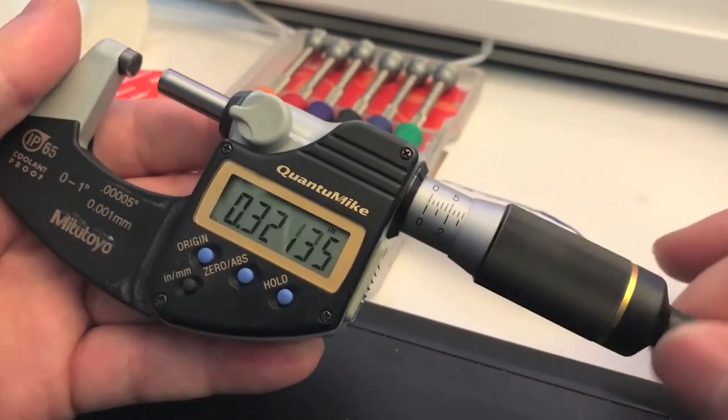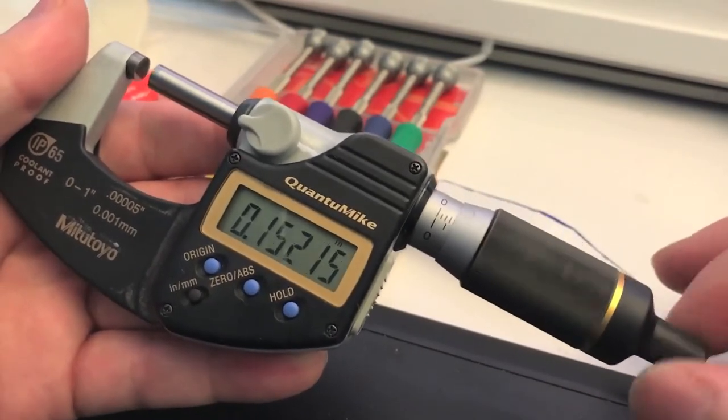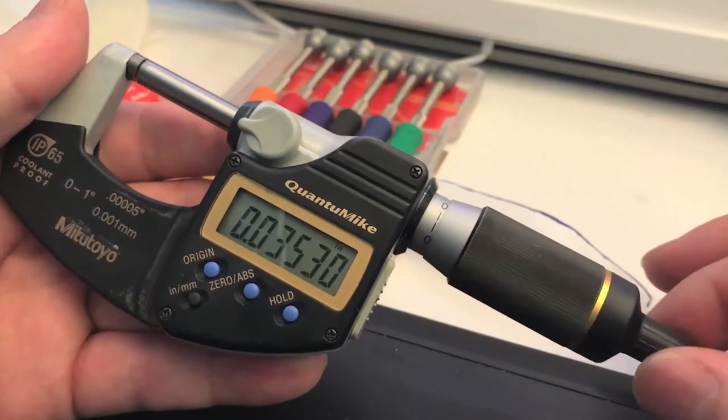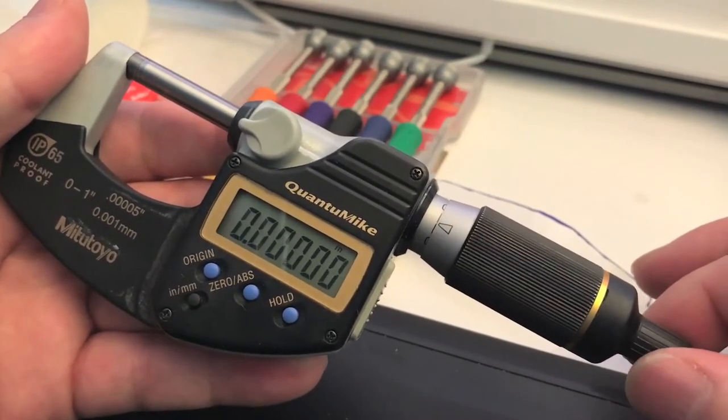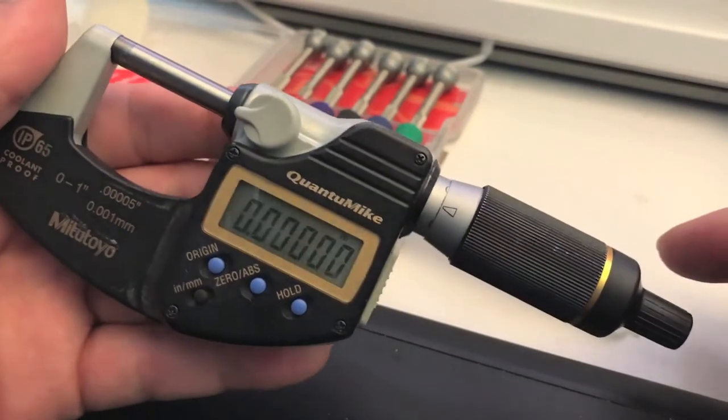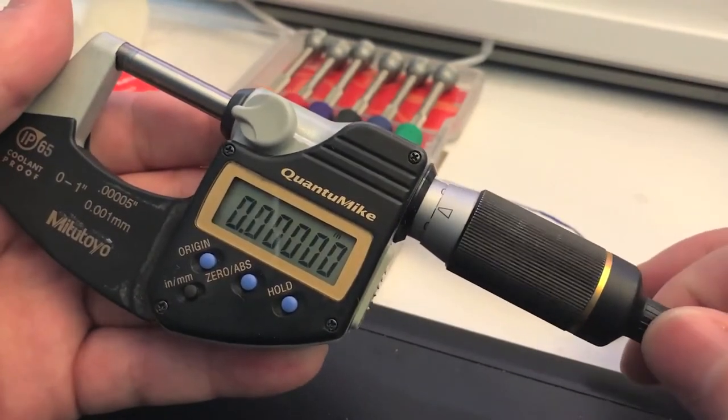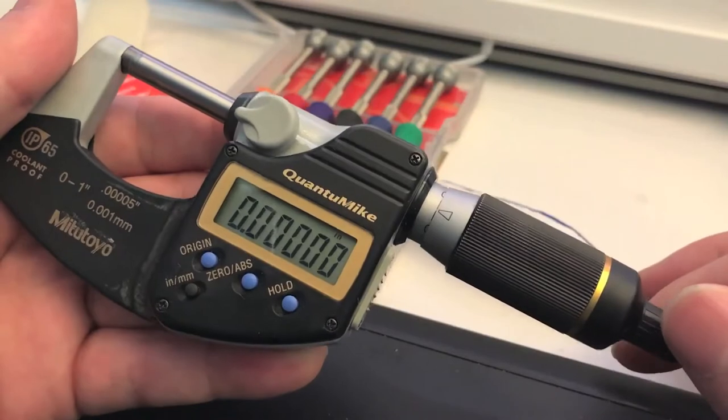Whereas the other mic, you don't have that issue because it's slow enough where you won't go slamming that spindle into the anvil. So approach the end of your measurement very slowly and then get a click or two and you should be good to go.